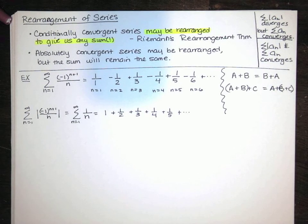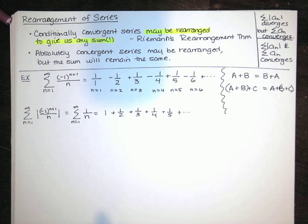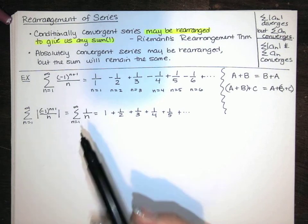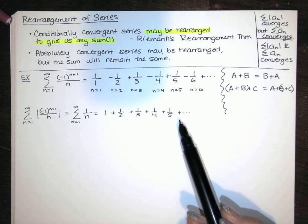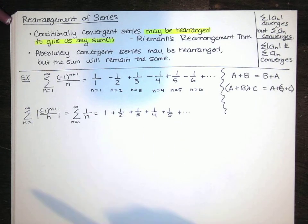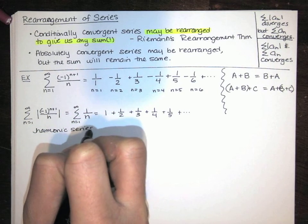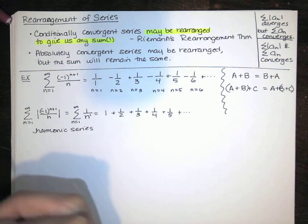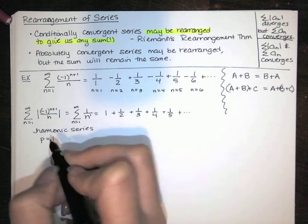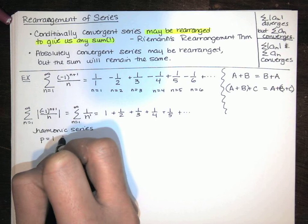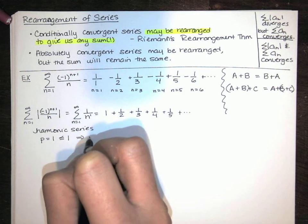It diverges to infinity. We replace n with x, we integrate from 1 to infinity, we get natural log of the absolute value of x. We substitute in b, substitute in 1 and subtract, then take the limit as b goes to infinity — we get natural log of b, and it just keeps growing and growing. So this slowly goes to infinity as we take more and more terms. This is called the harmonic series — it's a p-series with p equals 1. If p equals 1 for a p-series, that p-series diverges.